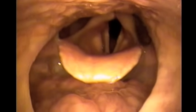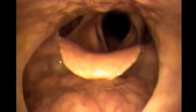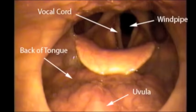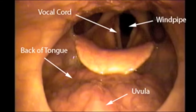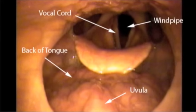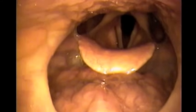Shown here is what the upper airway looks like in a normal sleeping individual. The airway is completely open without any areas of obstruction or vibration.